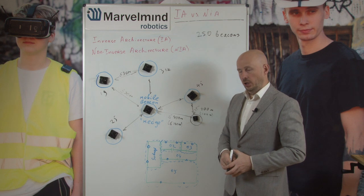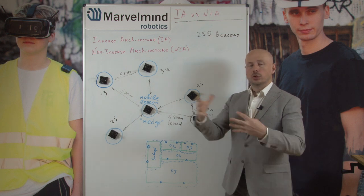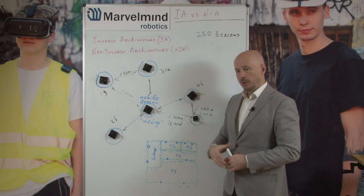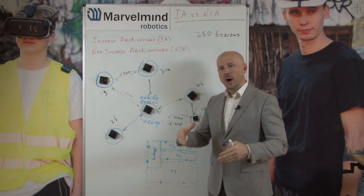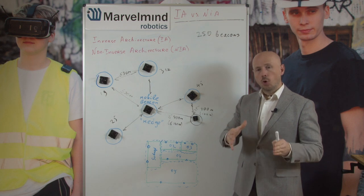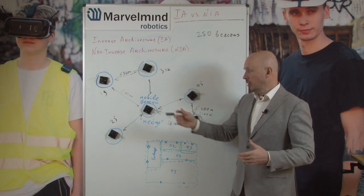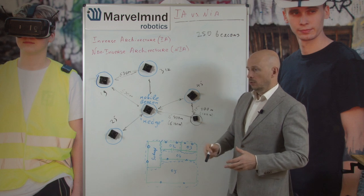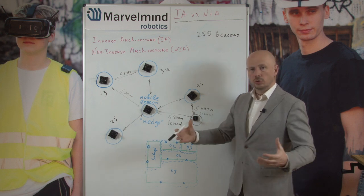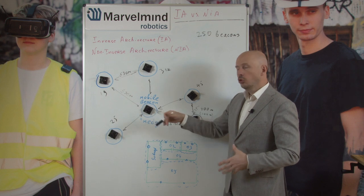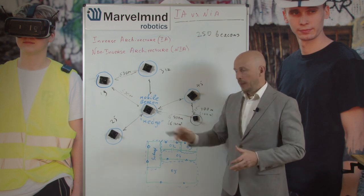The drawback of inverse architecture is that since the mobile beacon is receiving ultrasound, you cannot place it on something noisy like a drone. Drones emit broadband sound ranging from audible to ultrasonic frequencies, which simply blocks reception from stationary beacons. Instead of 30 meters range, it could be reduced to 20, 10, or even 5 meters with a very noisy drone.